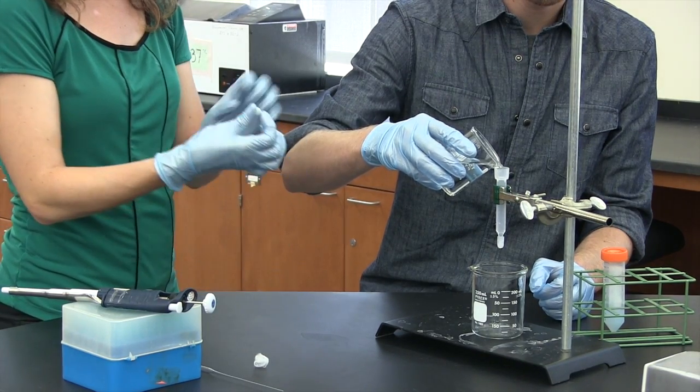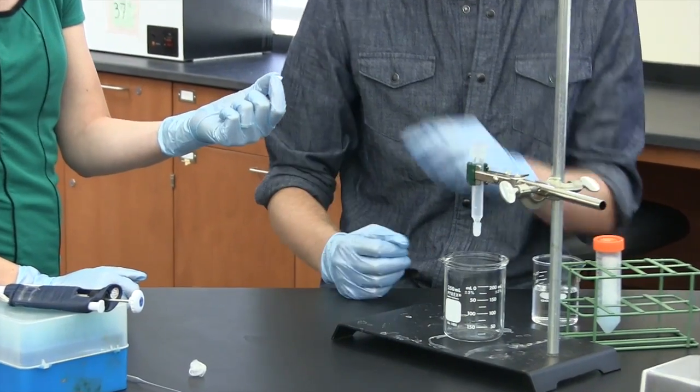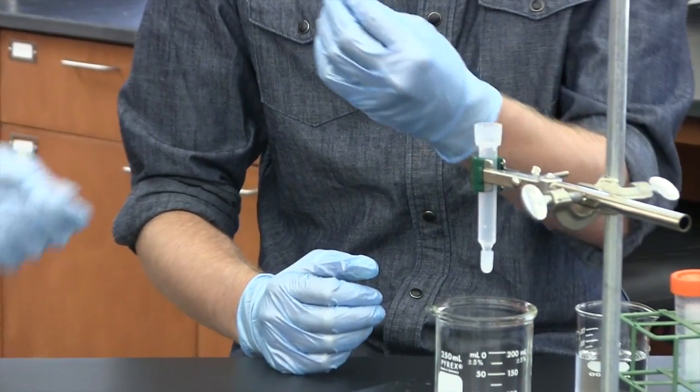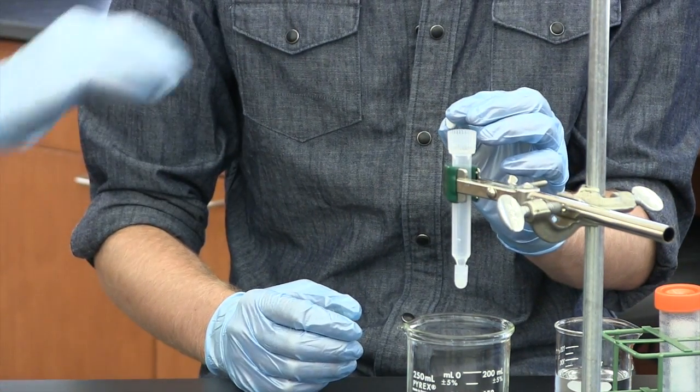We're going to add this little frit into the bottom, and that's what's going to hold the nickel resin into the plastic column. But before you put it in there, you need to make sure that it's wet and that there's no air underneath it. That's why you have to fill buffer all the way up to the top.